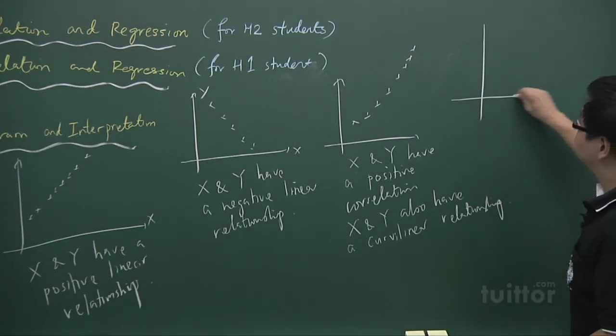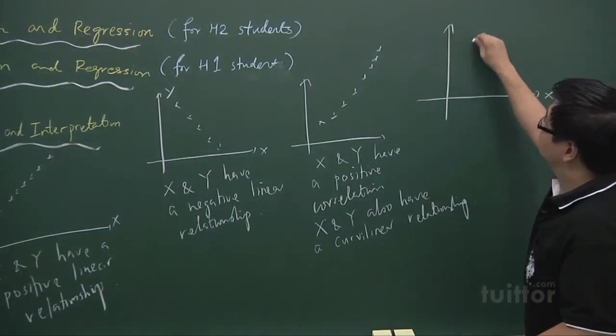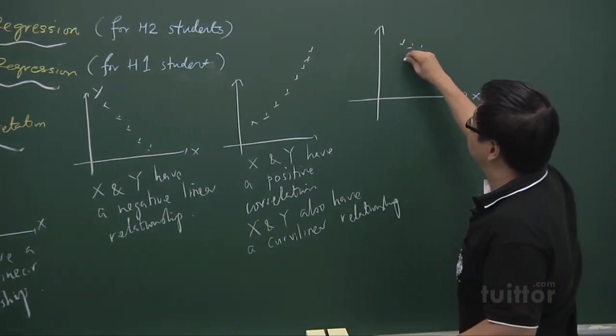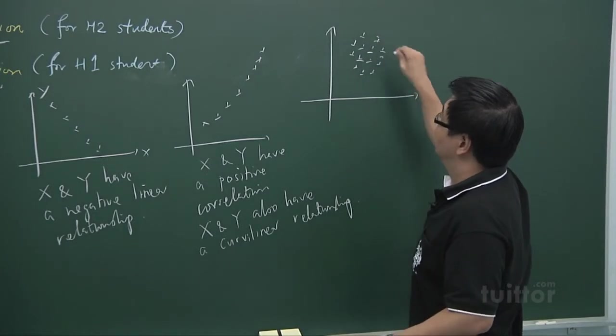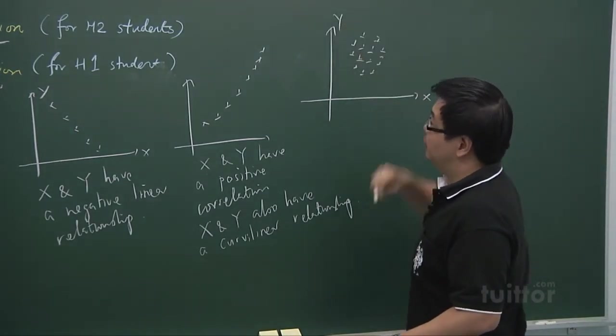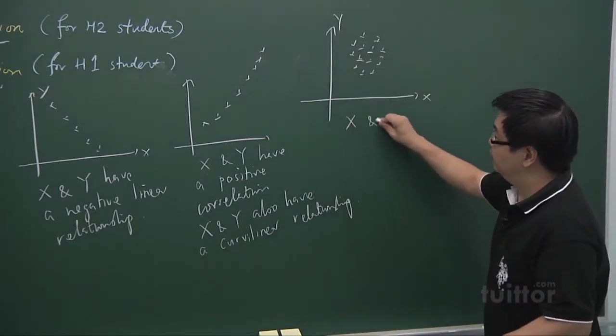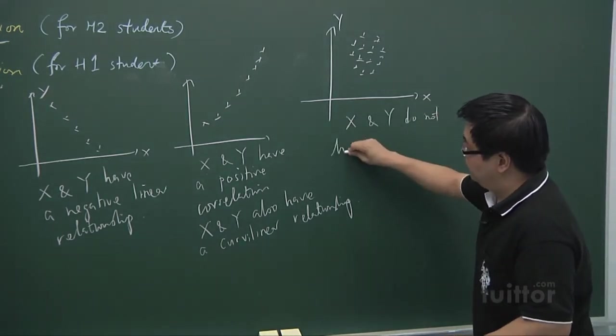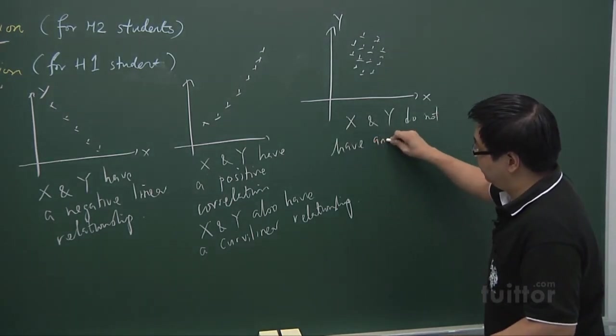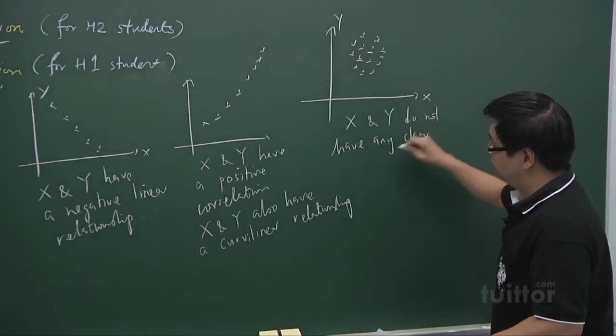Another example, where the points are all scattered everywhere. And then we say that x and y do not have any clear relationship.